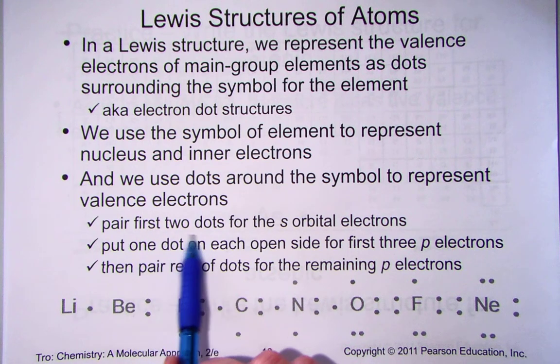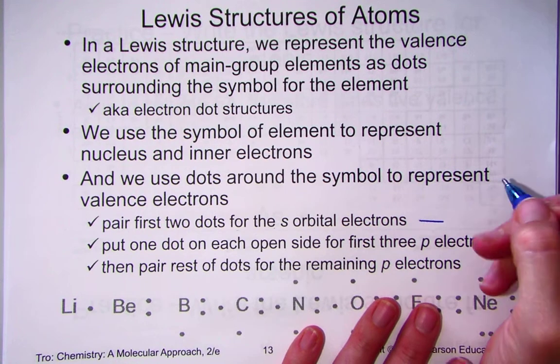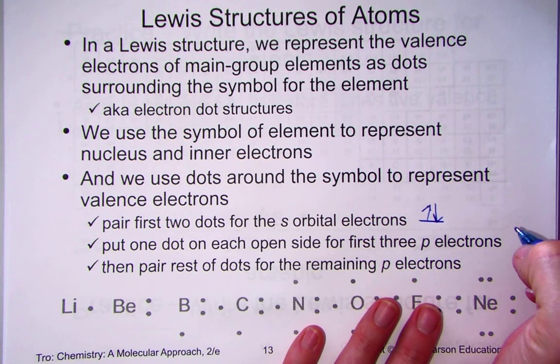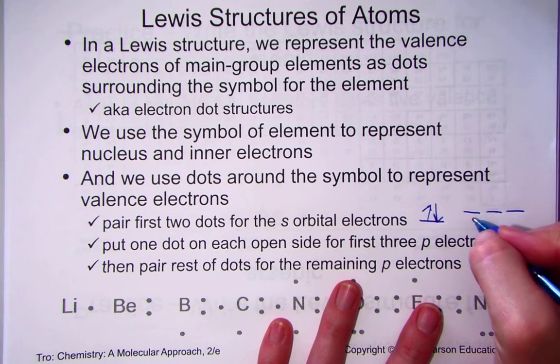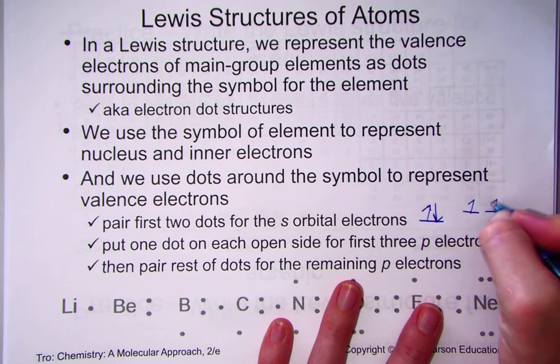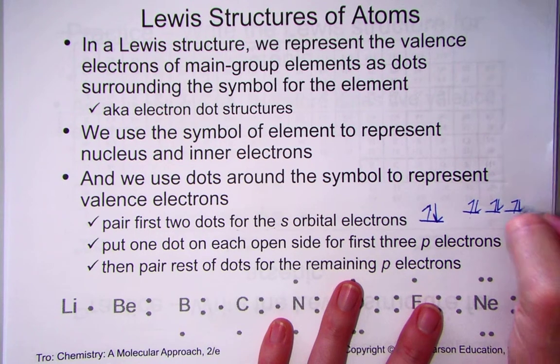We pair the first two dots for the S orbital. Recall that the S has one spatial orientation that can hold up to two electrons. The P sublevel has three spatial orientations, the PX, PY, PZ. We place one electron into each orbital first, and then we go back and pair the partner.